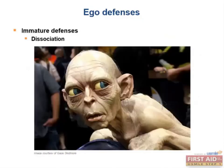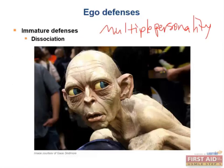Next we have dissociation, which refers to temporary, drastic changes in personality, memory, consciousness, or motor behavior to avoid emotional stress. The extreme forms of these dissociations involve patients with multiple personality disorder, where they develop multiple personalities to avoid dealing with inner stress, classically from child abuse or sexual abuse. Think of someone forgetting their identity or pretending to be someone else after a traumatic event. Usually these different personalities are suited for dealing with different emotional stresses, like Gollum in Lord of the Rings, who was nice sometimes but then had a more aggressive personality when stressed.